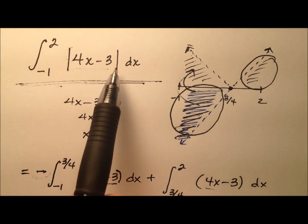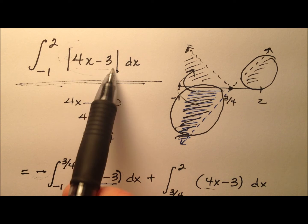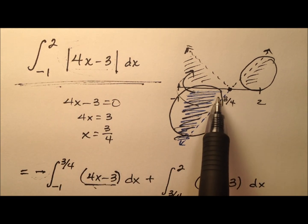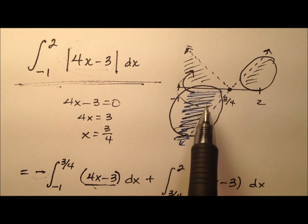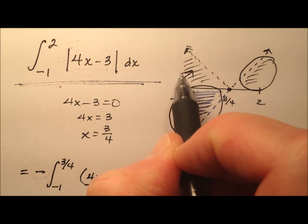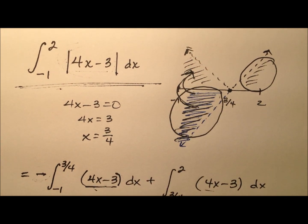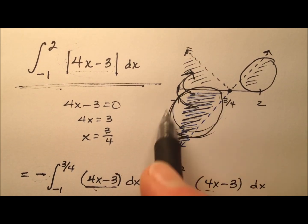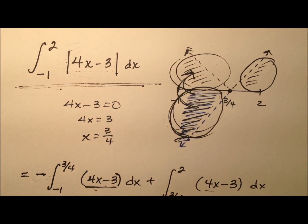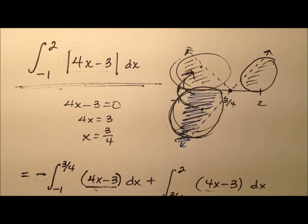So whenever we have these absolute value functions as integrands, whatever portion of the graph that would have been negative previously will be now reflected over the x-axis. And that area, which would have been negative, is now positive. So instead of subtracting it, we'll be adding it.